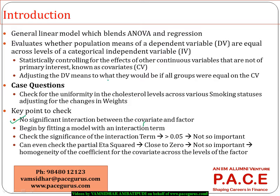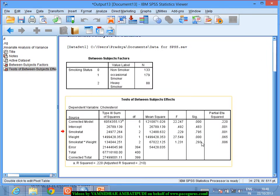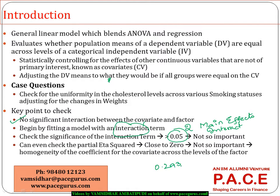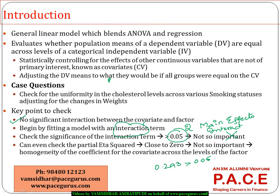We started by fitting a model with an interaction term, using the two independent factors as main effects and also adding their interaction. The significance of the interaction term is 0.293, which is greater than 0.05, meaning the interaction term is not important. The partial eta squared is almost 0, again indicating the interaction factor is not significant.